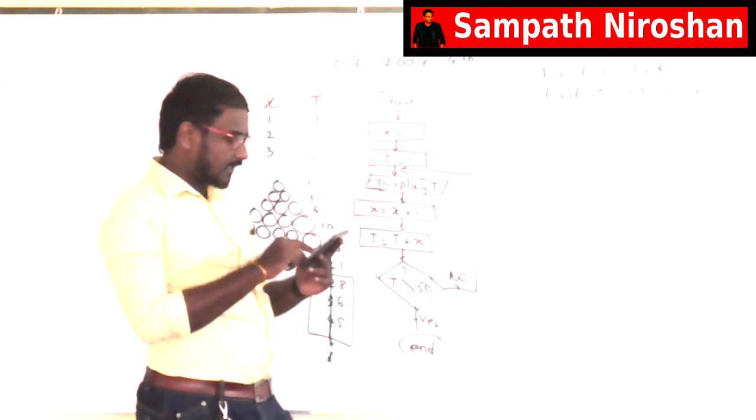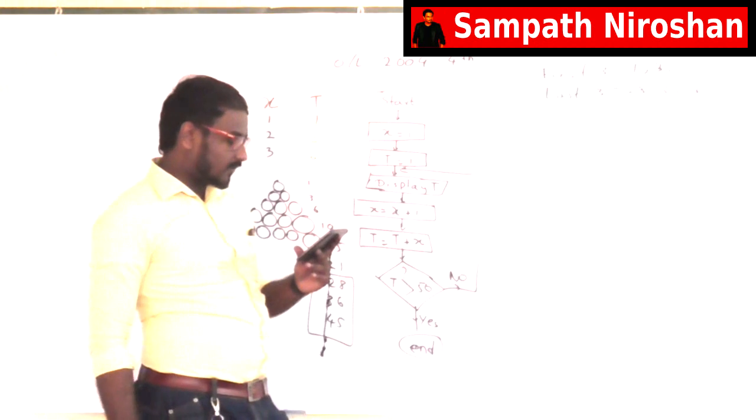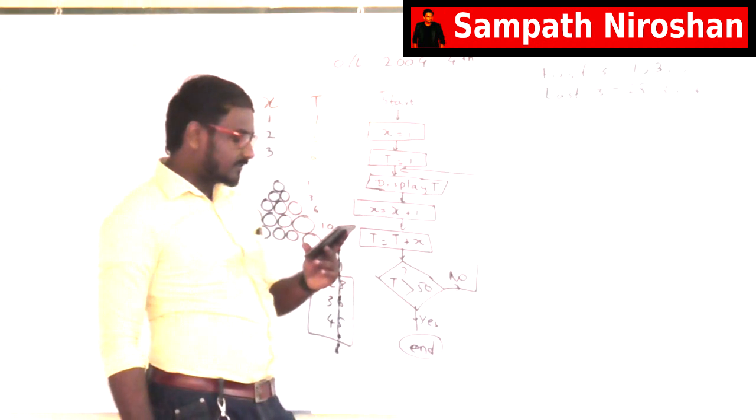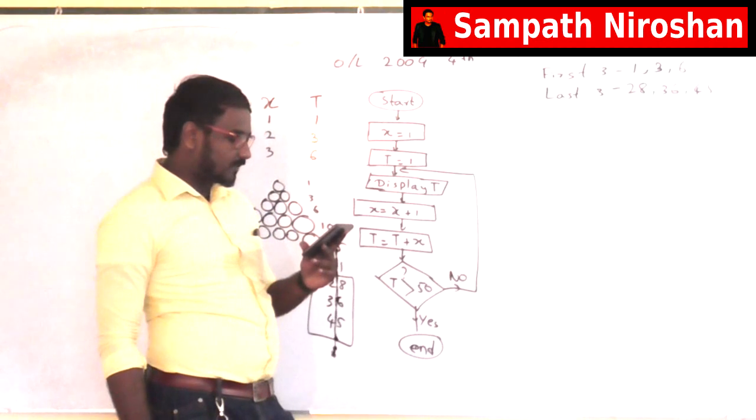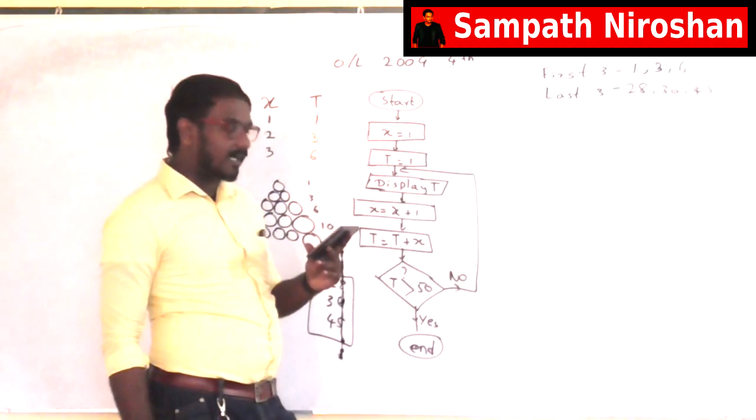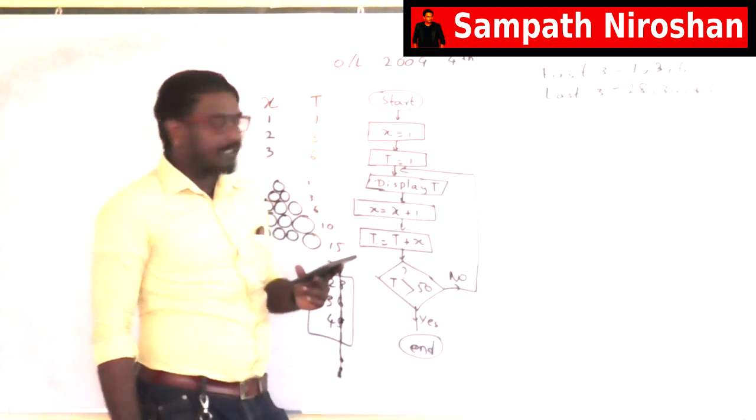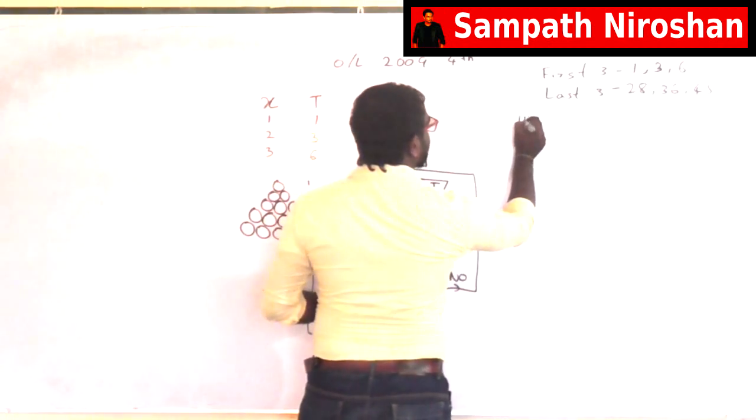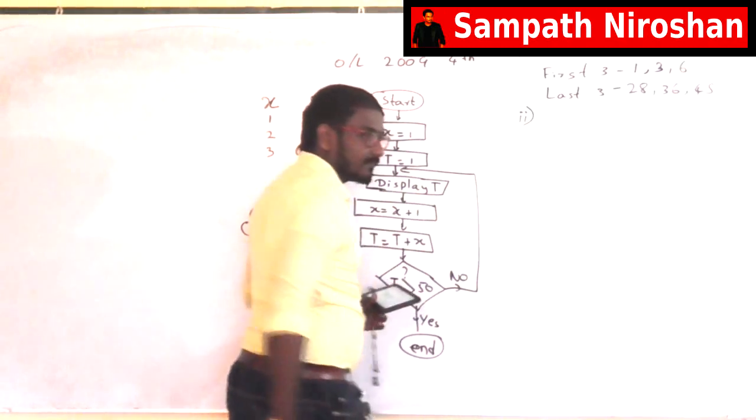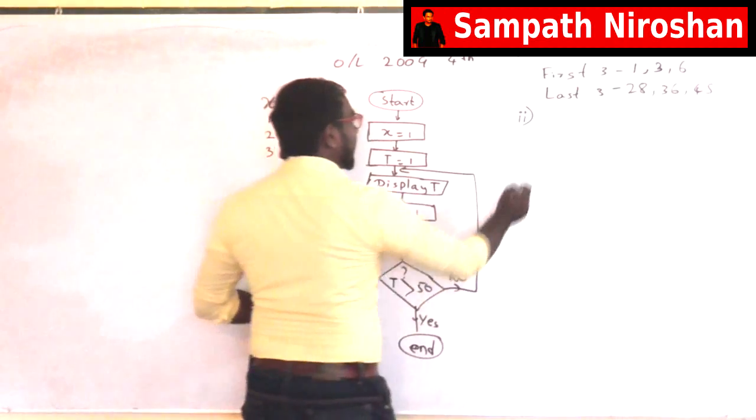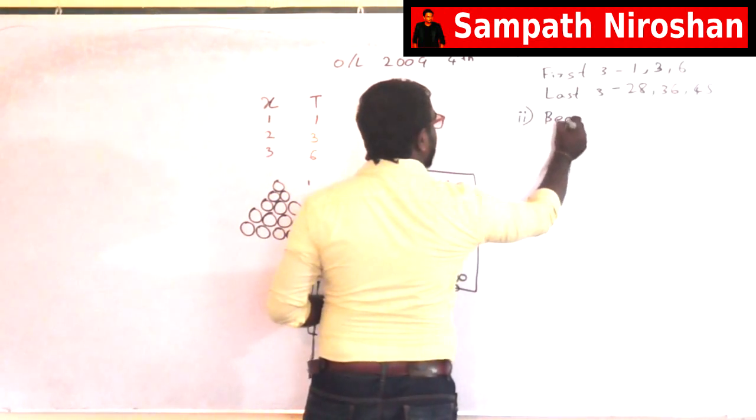So what is the second part of this question? Second part of this question says write a pseudocode that corresponds to the logic indicated by the flowchart. Generate the pseudocode, that's easy. We have done this many times. So let's do it. Again, so you have to start by Begin as usual. So you are saying Begin.